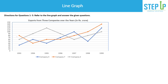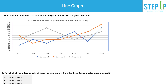For example, let's look at the year 1994. We can say that exports from company Y are less than company X because company Y's exports are 40 crores, whereas for company X the blue line is at 60 crores, and for company Z this is 90 crores. So this is how we understand the data, and similarly we can read and solve the questions.